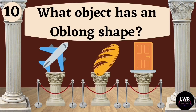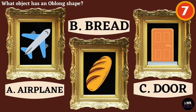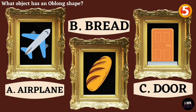Question number ten. What object has an oblong shape? Letter A, airplane. Letter B, bread. Or letter C, door.